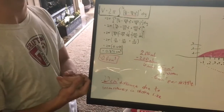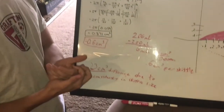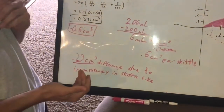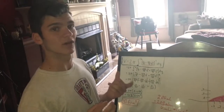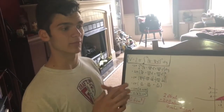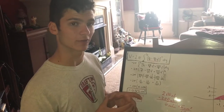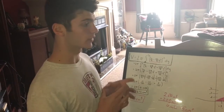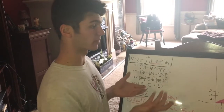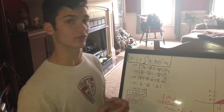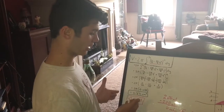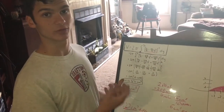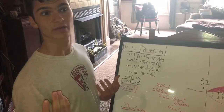We conclude that this difference in our answers is due to the inconsistency in Skittle size. Some Skittles can become deformed, some are built bigger than others or smaller than others. Therefore, we conclude that the Skittle we measured for our original measurements was somewhat smaller than the Skittles we used in our volume test.